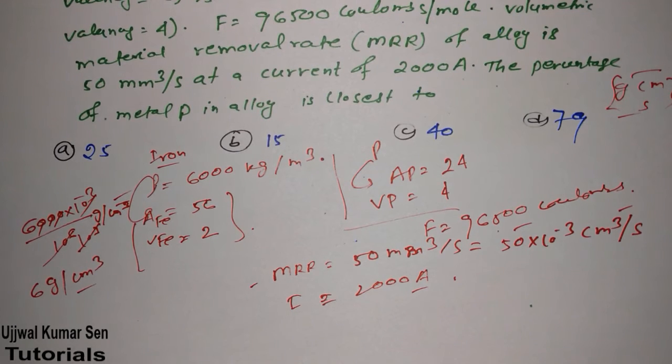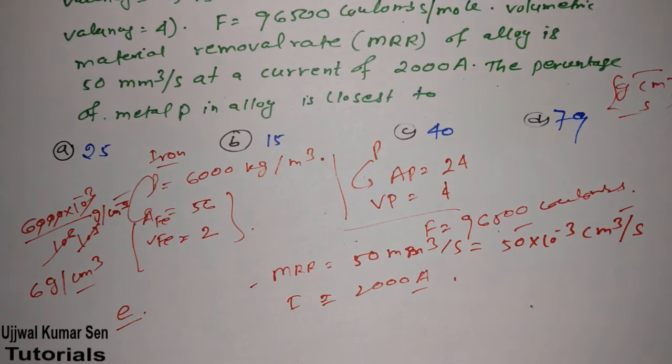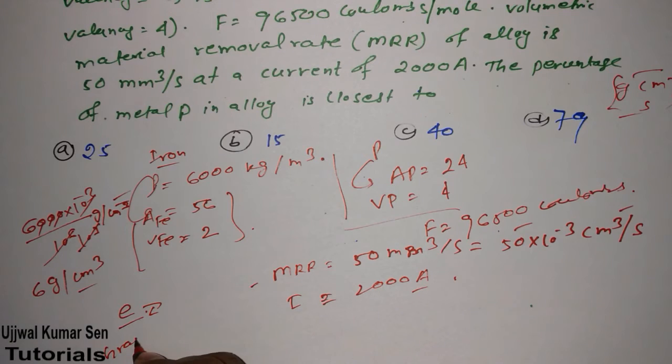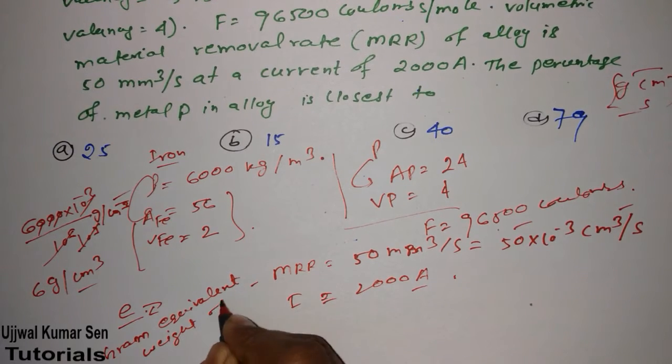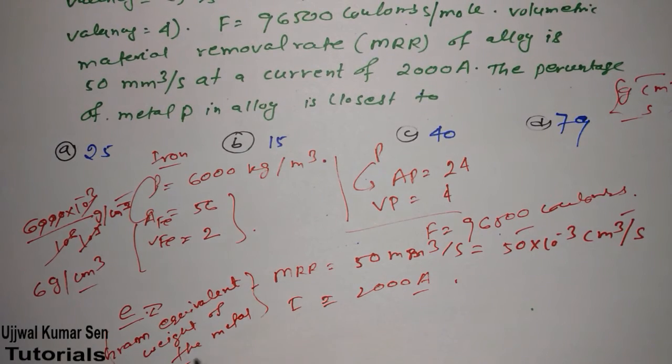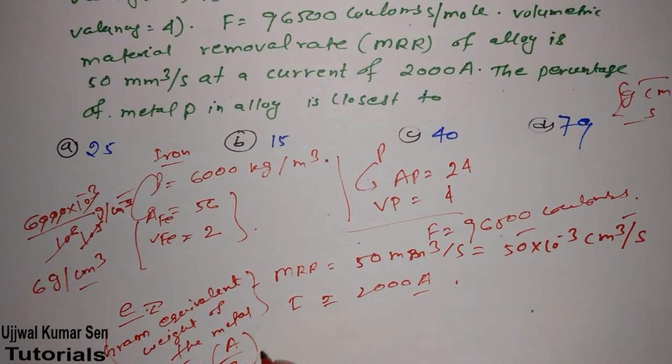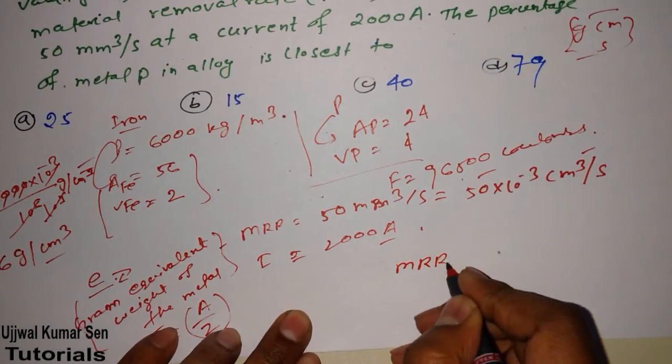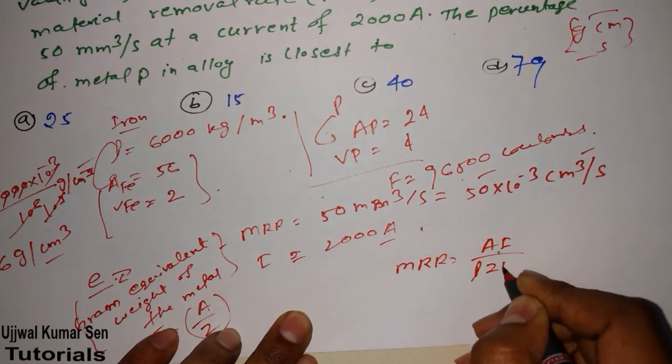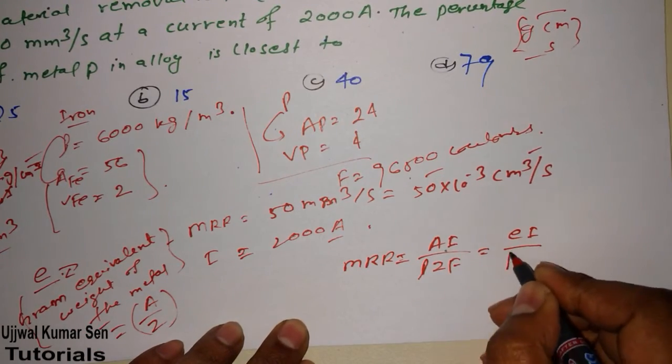We have done all things what is required. Now, for finding out this percentage, we need to get E. What is E? It is known as gram equivalent weight of the metal. E is equal to A by Z. What is A and what is Z? That's okay, A by Z we have gone through. It's valence and atomic weight basically. MRR is equal to A I by rho Z F. Therefore, we can say that E I by rho F.